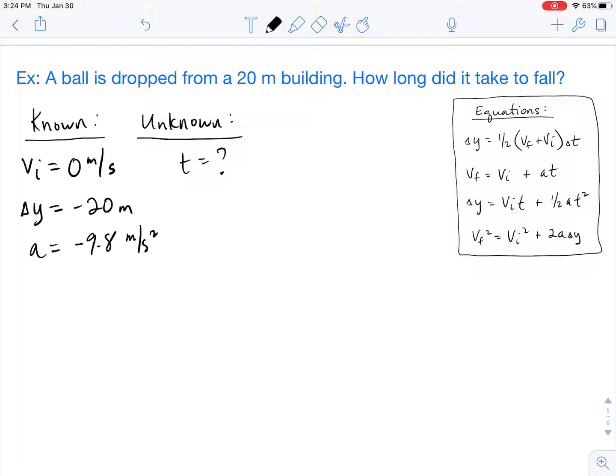So for example we have vi, we have y, we have a, we have t. The only thing we don't have is vf. And so because we don't have vf, the only equation that doesn't have vf in it is our delta y equals vi t plus one half a t squared equation. So that's the equation that we are going to use.